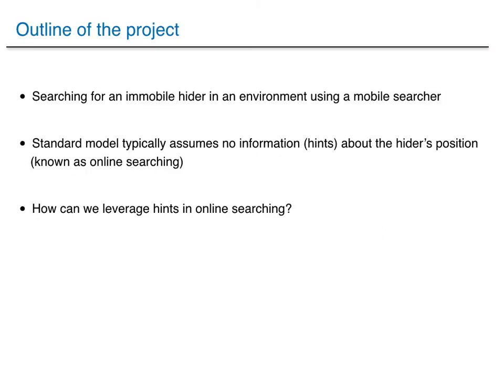In a nutshell, our project deals with searching in an environment for an immobile hider using a mobile searcher. The current framework, which is known as online searching, assumes that there is no information concerning the hider's position. However, in practice, we know that such information should be available — we should have some kind of external information or hint concerning the whereabouts of the hider. So the question we would like to address is how to leverage hints in this area.